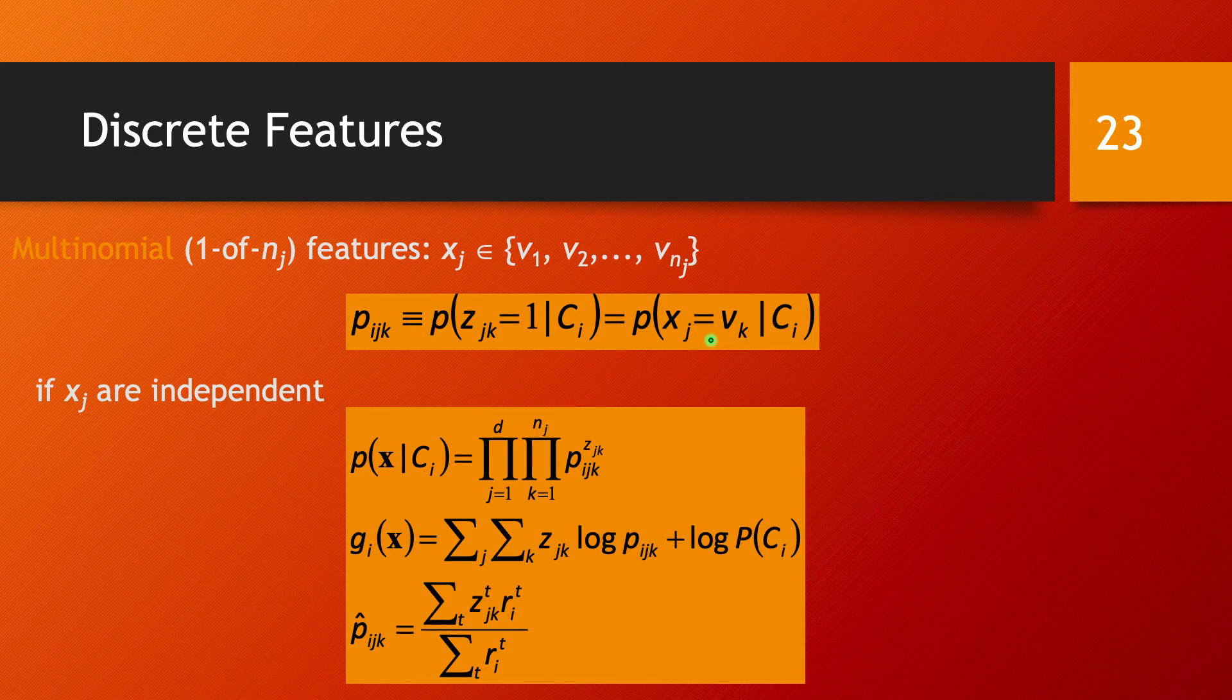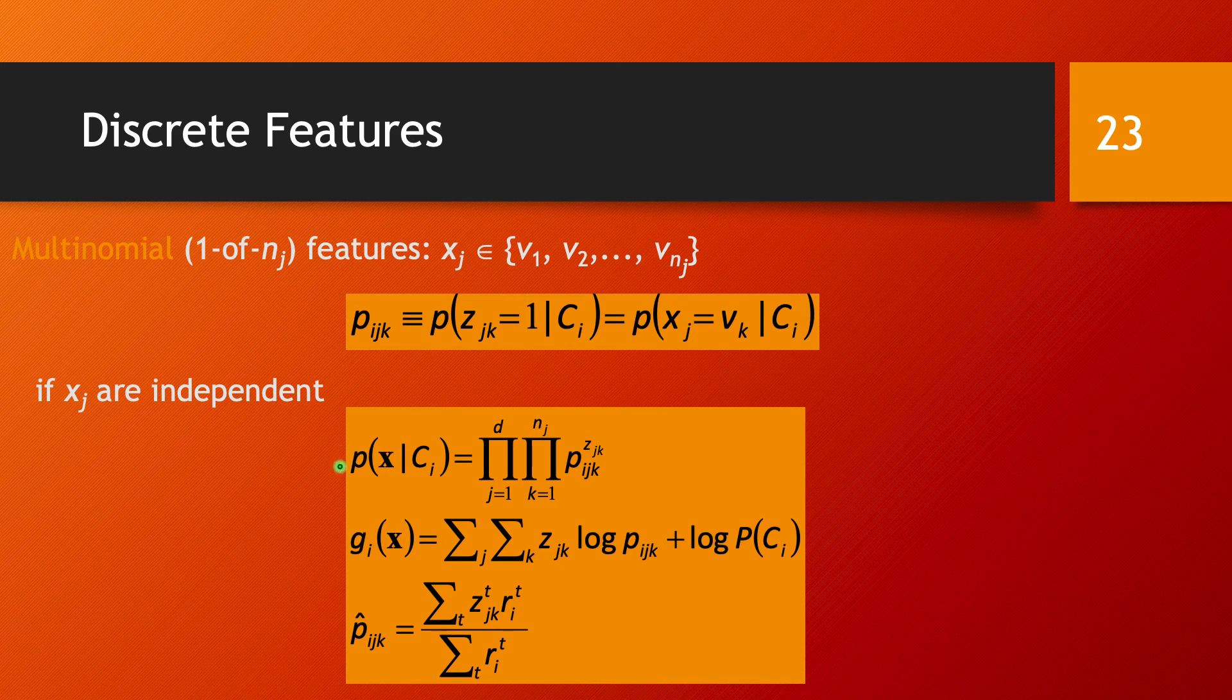If these features are independent—again, if we can apply the naive Bayes classifier—this conditional probability is written as a product of the individual probabilities for each feature and for each value that feature can take.